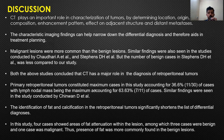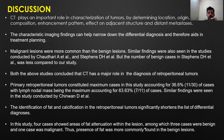Primary retroperitoneal tumour constituted the maximum cases in my study, accounting for 11 cases — 36.6% — with six cases being lymph node masses, accounting for 63.63%. A similar finding was noted in the study conducted by Chaudhary et al. The identification of fat and calcification in retroperitoneal tumours significantly shortens the list of differential diagnoses. In this study, four cases showed fat attenuation within the lesion — three were benign and one was malignant — signifying that fat was more commonly found in benign lesions.